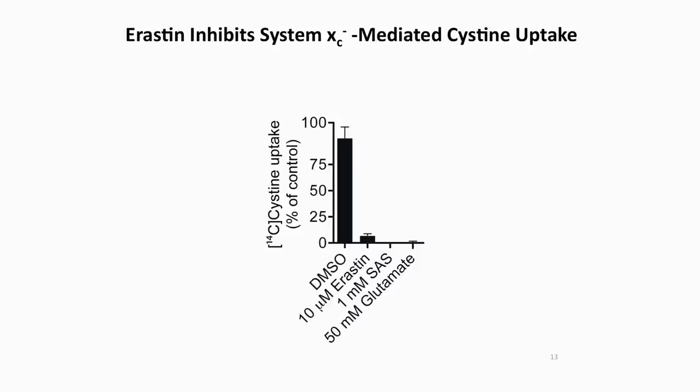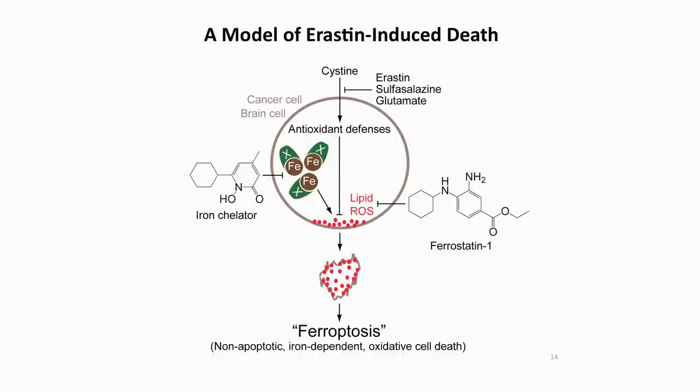In particular, we hypothesized that Erastin and glutamate might bind to the same target. One mechanism of glutamate-induced lethality in brain slices is known to involve the System XC transporter — a cell surface transporter that imports cystine into the cell and exports glutamate. Excess extracellular glutamate can inhibit System XC, and using radiolabeled uptake assays, we found that Erastin was a highly potent inhibitor of cystine uptake by System XC. These results suggest that Erastin and glutamate trigger a similar cell death phenotype because they are inhibiting the same target, leading to an oxidative form of cell death which we call ferroptosis.